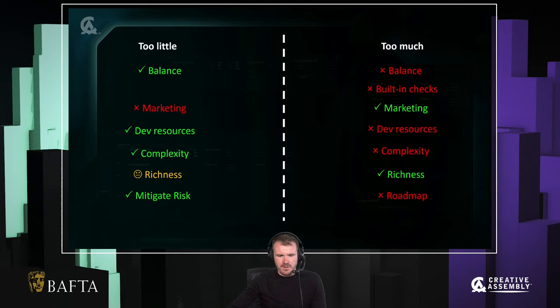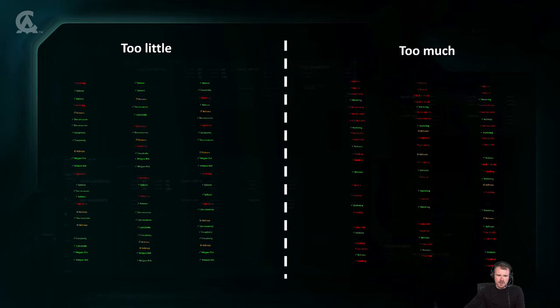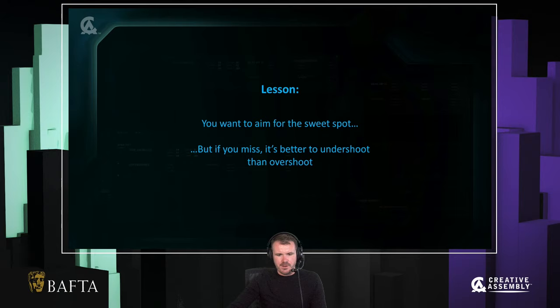As we look down these lists, I hope a pattern is starting to emerge: too little is looking a little bit better than too much. I encourage all game devs to do this exercise for your own game — game out what too little and too much asymmetry looks like. I think you'll find that undershooting in most cases is better than overshooting. This brings us to the first lesson: aim for the sweet spot. Obviously that's where you're trying to get to, but if you miss — and you probably will, because it's hard — it's better to undershoot than it is to overshoot.